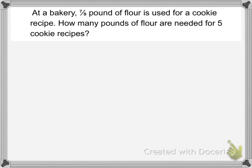So let's think about what are our key words here that help us know that we're multiplying in this word problem. So if I have seven-eighths pounds for one cookie recipe, then I know that I'm making five groups of seven-eighths.